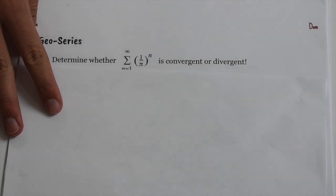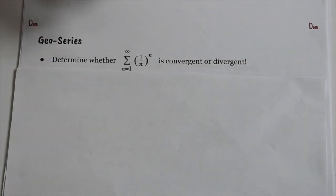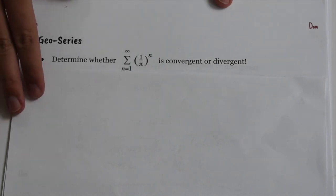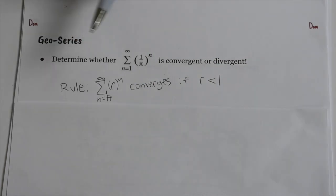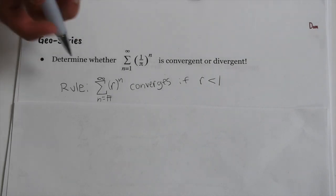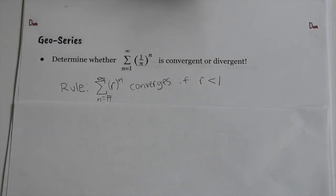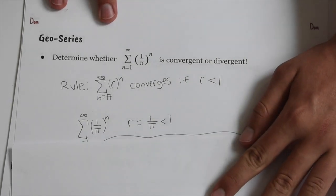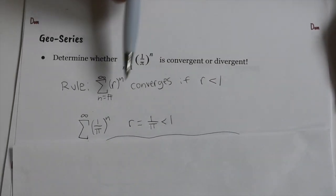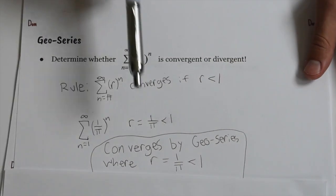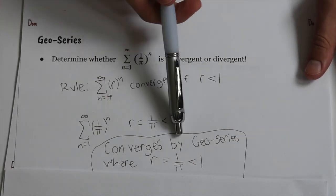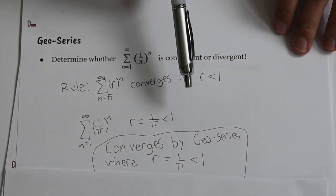The problem is: determine whether the summation from 1 to infinity of 1 over π to the n is convergent or divergent. We remember the rule for geometric series: if the summation from some number to infinity of r to the n, and r is less than 1, it converges. Here r is 1/π, which is less than 1, so it converges by the geometric series test.